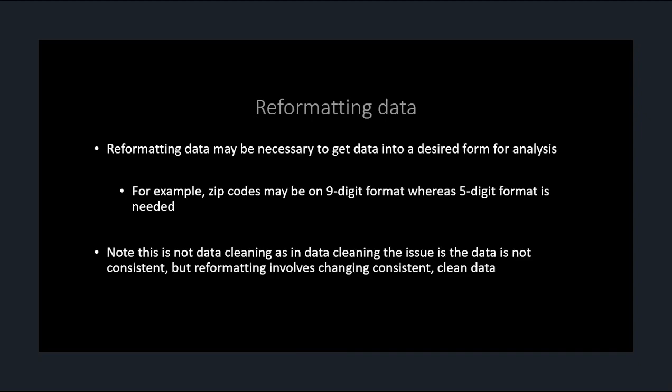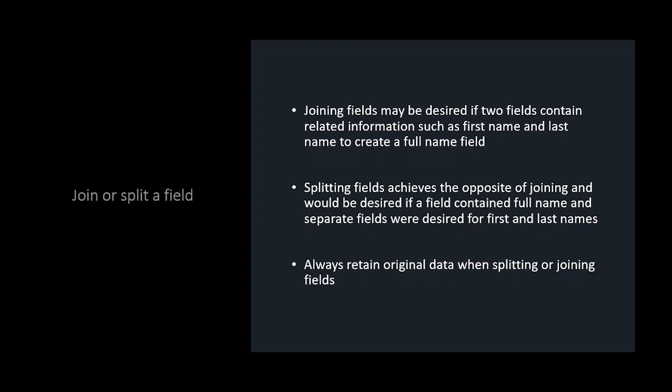Reformatting data: zip codes are a very common example. Maybe you want a five-digit zip code because it's much easier to group your data, so you would reformat it from nine digits to five. This is not data cleaning — cleaning would be converting everything to the same format. Here the data is already in consistent nine-digit format; you're simply changing the representation.